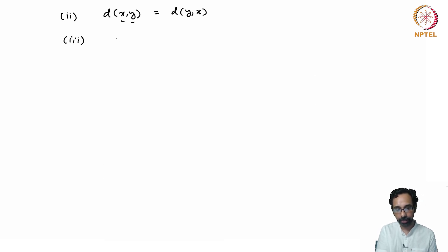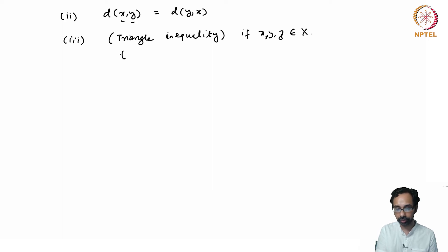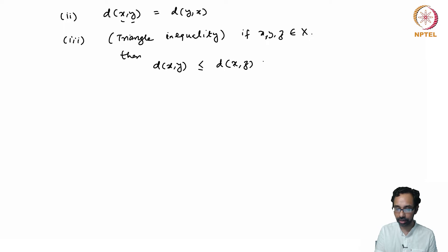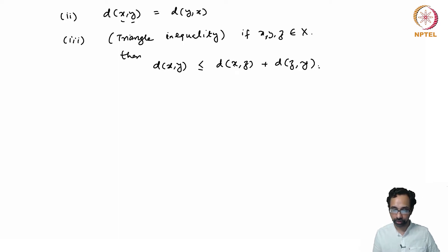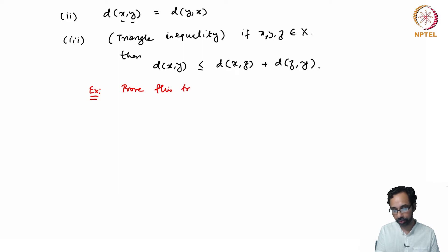The third important property is the triangle inequality. If x, y, and z are three points on the real line, then the distance between x and y is less than or equal to the distance between x and z plus the distance between z and y. This is called the triangle inequality for the distance function. I will leave it as an exercise for you to prove this triangle inequality.